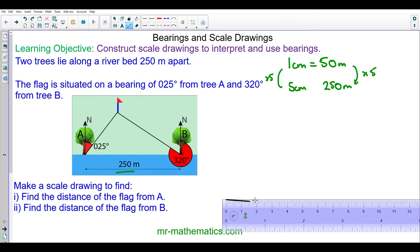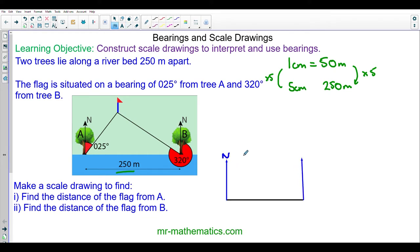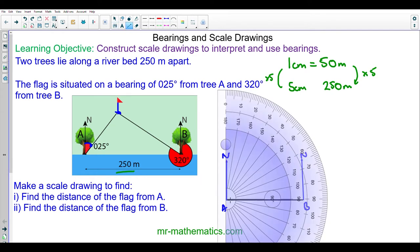I'm going to draw a horizontal line 5 centimeters long, and because I'm working with bearings I'm going to draw in two north lines, each one from A and one from B. This flag is 025 degrees from north here. So I'm going to draw a straight line which is 25 degrees clockwise from the north line.